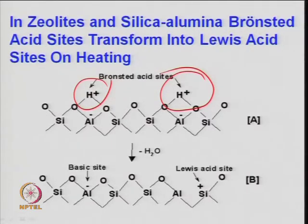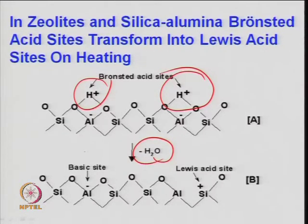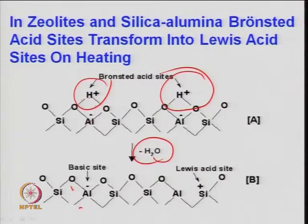Zeolite can substitute for alkylation reactions where H₂SO₄ is used as catalyst, or any reaction where strong acidity is desired. When heated, water reacts with the oxygen molecules and leaves, converting to loose acidic (Lewis) sites — the framework has released the water in the cage and the O-H groups are removed. If you add water again, it transforms back to Brønsted.